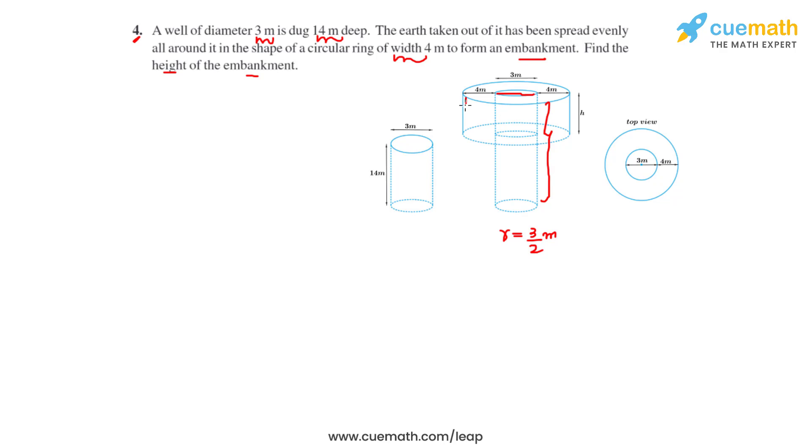we get a width of 4 meters around the well as seen in the figure. If we have a top view, this is how it looks. This inner circle is the mouth of the well, and the outer circle is the embankment formed around the well. We will have two radii here: